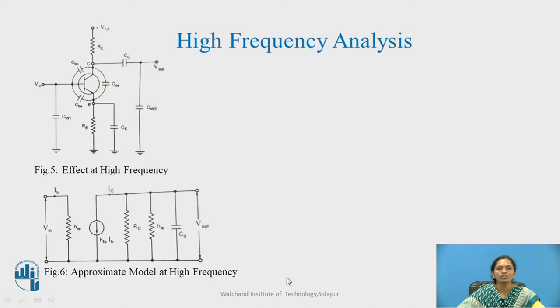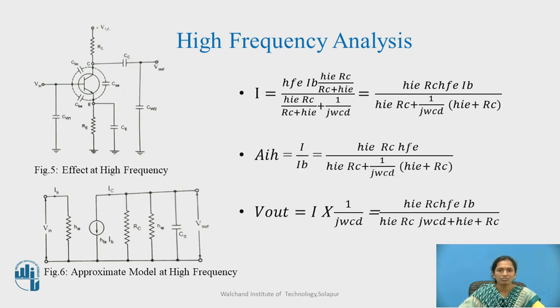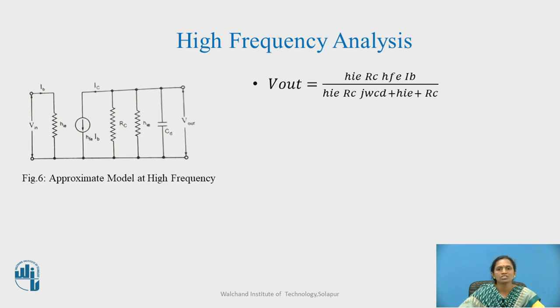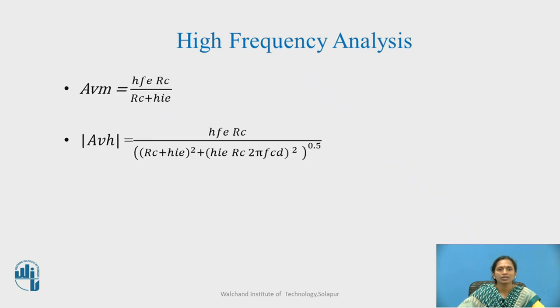In the same way if I go for the high frequency at that time my inter electrode capacitors will come into picture which gives my inter wired capacitance. Therefore, I treat it as CD that is depletion capacitance and when I go it further I will again have the same procedure which we have done in the low frequency analysis and I will calculate my high frequency gain over there. Why it is so? Because only the CD will be changing over there. This j omega CD will be extra in that analysis.